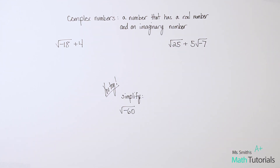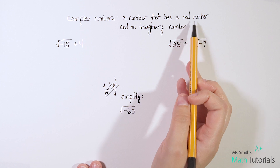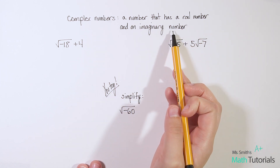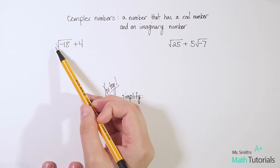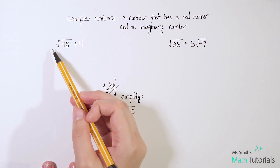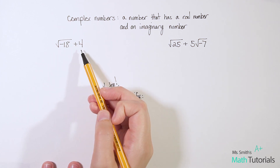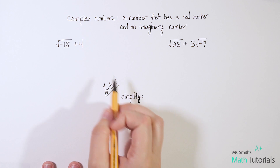One other thing I want to talk about is complex numbers. A complex number is a number that has both a real number and an imaginary number. Let's look at this expression: square root of negative 18 plus four. Let's simplify this, and our answer will be a complex number.